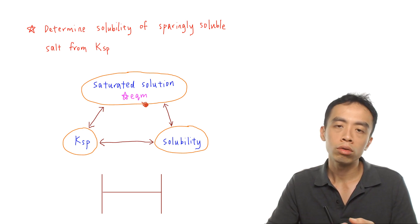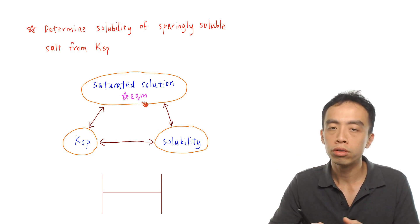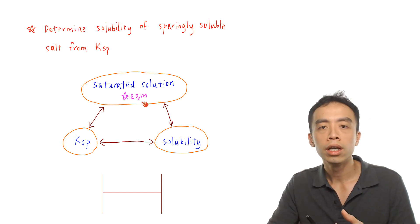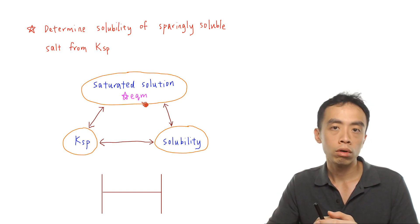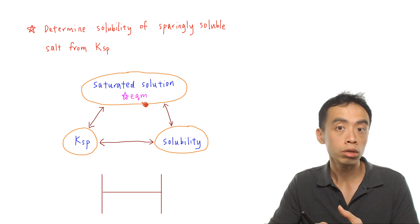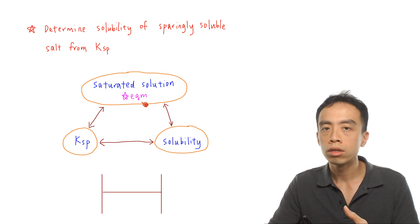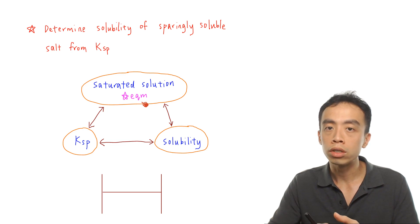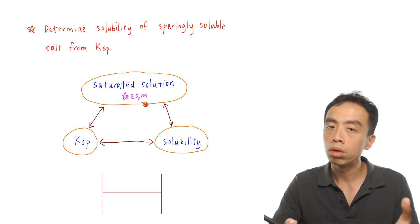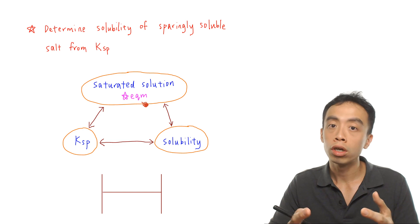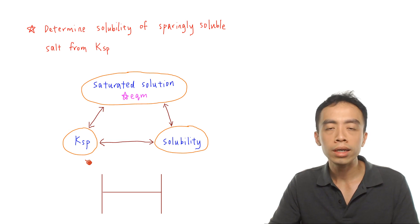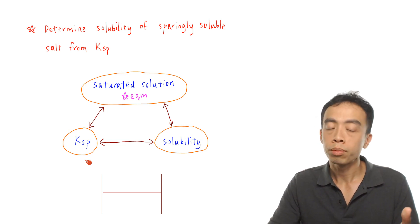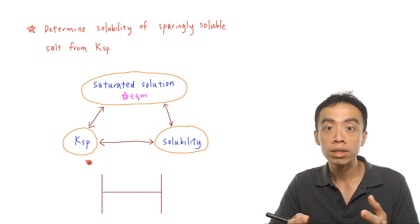If I have a container and I start to throw in some salt which is sparingly soluble, and if it begins dissolving, and if the solution is diluted, we know that more of the salt will continue to dissolve, so the concentration of the ions in solution will continue to increase. If the concentration of the ions continues to change, the system is not at equilibrium, and it is not meaningful to talk about the equilibrium constant for a system that is not at equilibrium. So the solubility product, or Ksp, which is essentially the equilibrium constant for the sparingly soluble salt, is not relevant for diluted solutions.